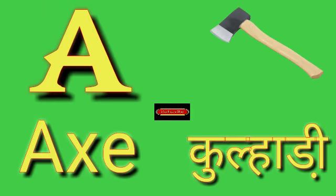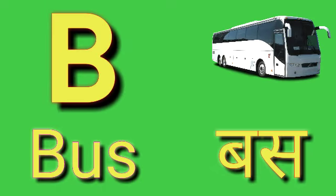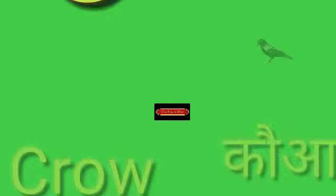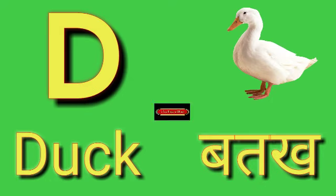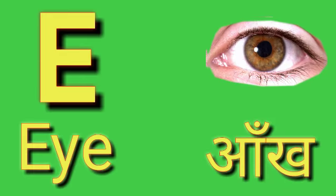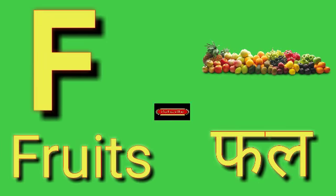A for X, X means Kulaari. B for Bus, Bus means Bus. C for Crow, Crow means Kawa. D for Duck, Duck means Batak. E for I, I means Aank.